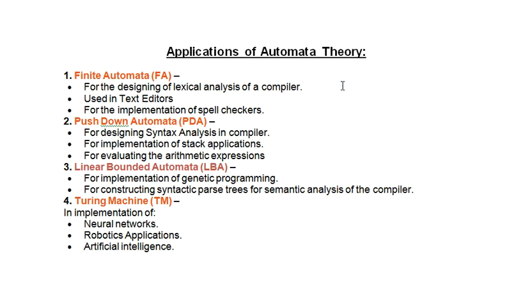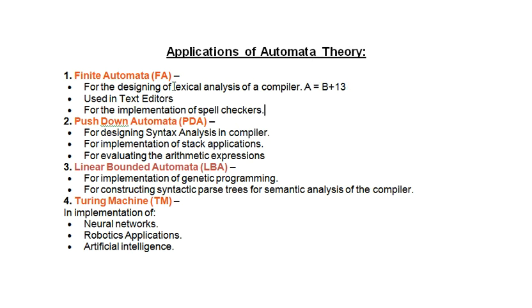Suppose we have an expression like 'a = b + 13'. In lexical analysis, the compiler scans from left to right, character by character, and groups these characters into tokens. For example: 'a' and 'b' are identifiers, '=' is an assignment operator, '+' is an addition operator, and '13' is a number. This grouping and identification of tokens is carried out with the help of finite automata.